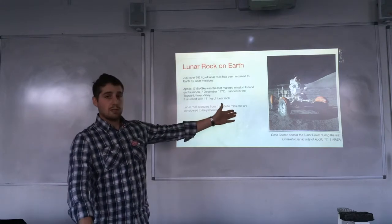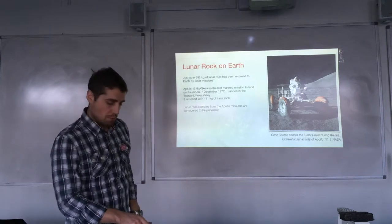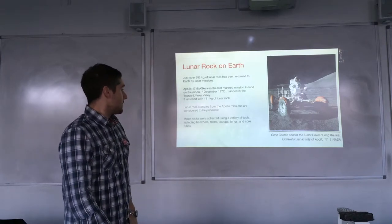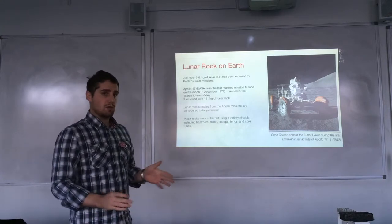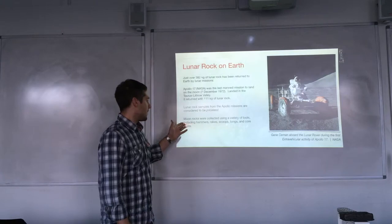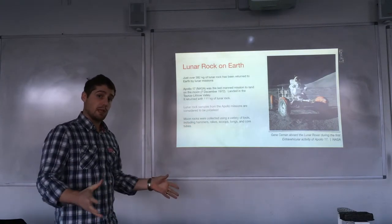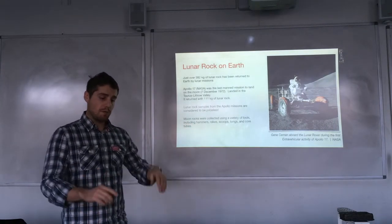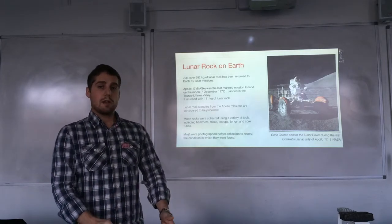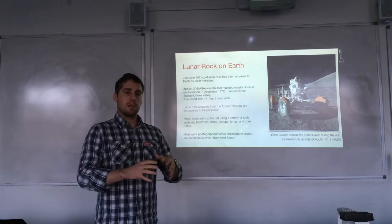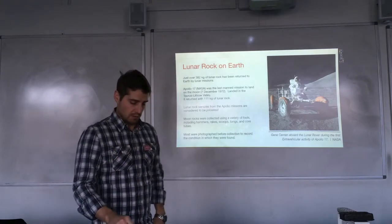That's one of the Apollo 17 astronauts on a lunar rover, sometimes called a moon buggy. The way moon rock was collected was through the astronauts using a variety of tools — hammers, rakes, scoops, tongs, and core tubes. But before collecting, they would take photographs of the samples so that back on Earth we could be clear on how the site looked before the sample was collected.